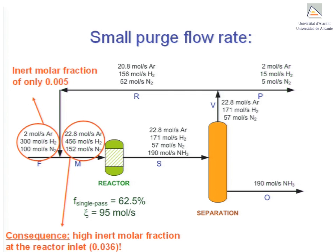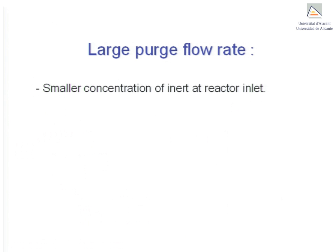Second case: the other option would be to make the purge flow rate large. In this way there would be less argon flowing around the system, but as a consequence a lot of reactant will be lost through stream P and a smaller product ammonia flow rate will be obtained. So say instead of 200 moles a second of ammonia, that 140 moles a second are formed. This implies an extent of reaction of 70 moles a second.